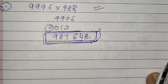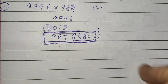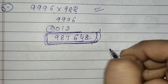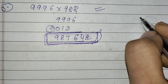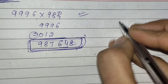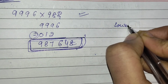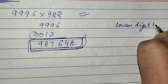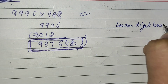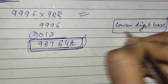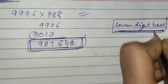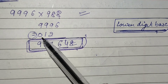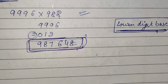The only difference from the last video's calculation is that this time you have to take care of your lower digit base value. You have to convert your number as per your lower digit base value, and then do the addition or subtraction.